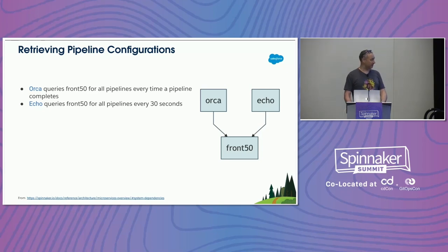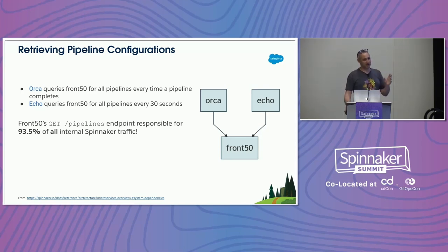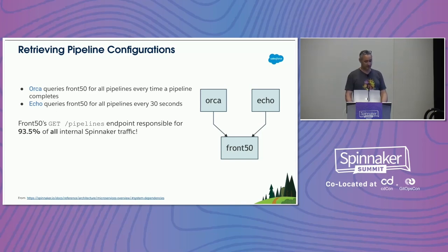There's a bit of a special case with manual execution, but we'll get to that. This is the before state — querying all this stuff is crazy. It turns out it's so much crazy that 93.5% of all the data flowing around in Spinnaker was pipelines — pipeline configuration JSON. We have a ton of pipelines, probably more than most, but this is happening for everybody. Over a 48-hour measurement period, that's the number that came out.